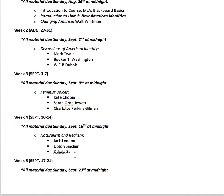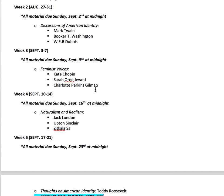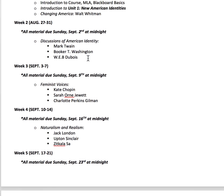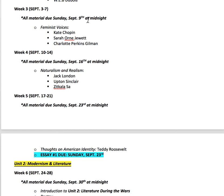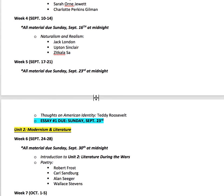I do suggest you go ahead and do it by the deadline just to get used to the deadlines, but I've given you a bit of a grace period for those who come late to the course. From there on, everything will be due each week on Sunday at midnight. Week two focuses on the New American Identity — we talk about Mark Twain, Booker T. Washington, and W.E.B. Du Bois. Week three focuses on early feminist voices — we'll look at Chopin, Sarah Orne Jewett, and Charlotte Perkins Gilman's 'The Yellow Wallpaper.' Week four wraps up with naturalism and realism, so we'll look at Jack London, Upton Sinclair, and Zitkala-Ša.